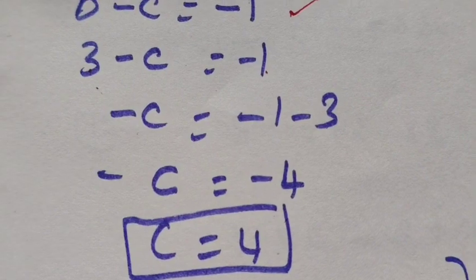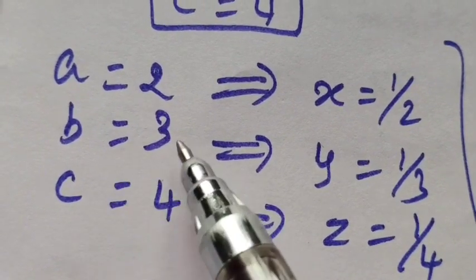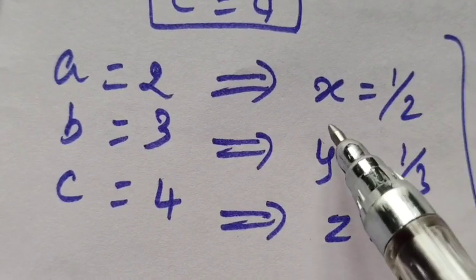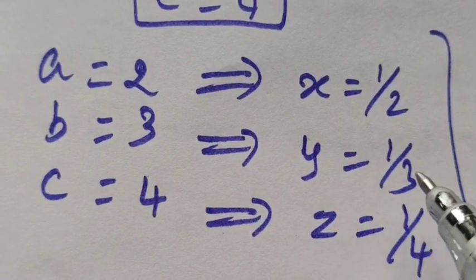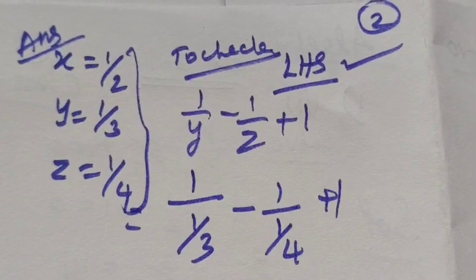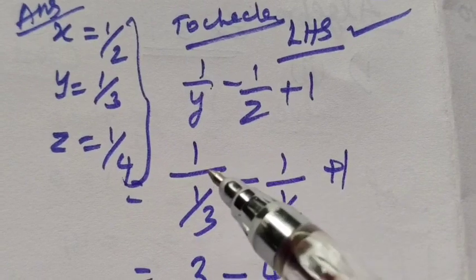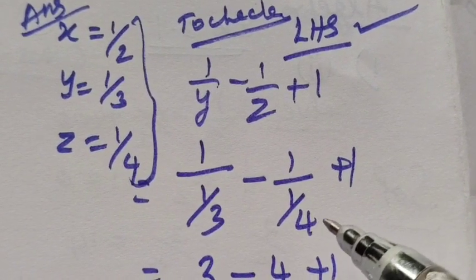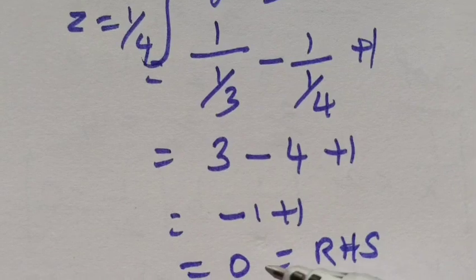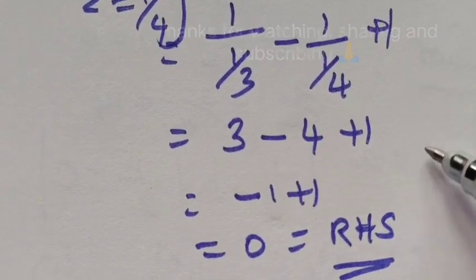You are getting the value c equal to 4. Check in the equation: 1 by y minus 1 by z plus 1. 1 by y value is 1 by 3, then z value 4. So 3 minus 4 plus 1, minus 1 plus 1 equal to 0, equal to RHS. Value check you are getting and you are getting confident.